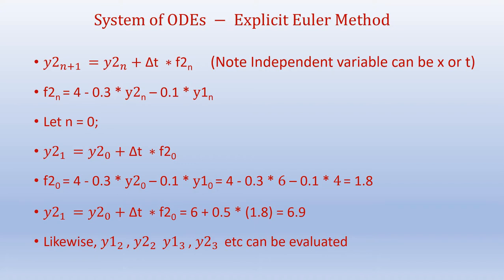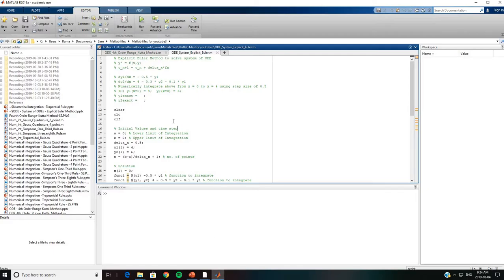Then y2_1 = y2_0 + Δt × f2_0 = 6 + 0.5 × 1.8 = 6.9. By using the same algorithm we can calculate y1_2, y2_2, y1_3, y2_3, etc. We will now try to solve the same problem using MATLAB.